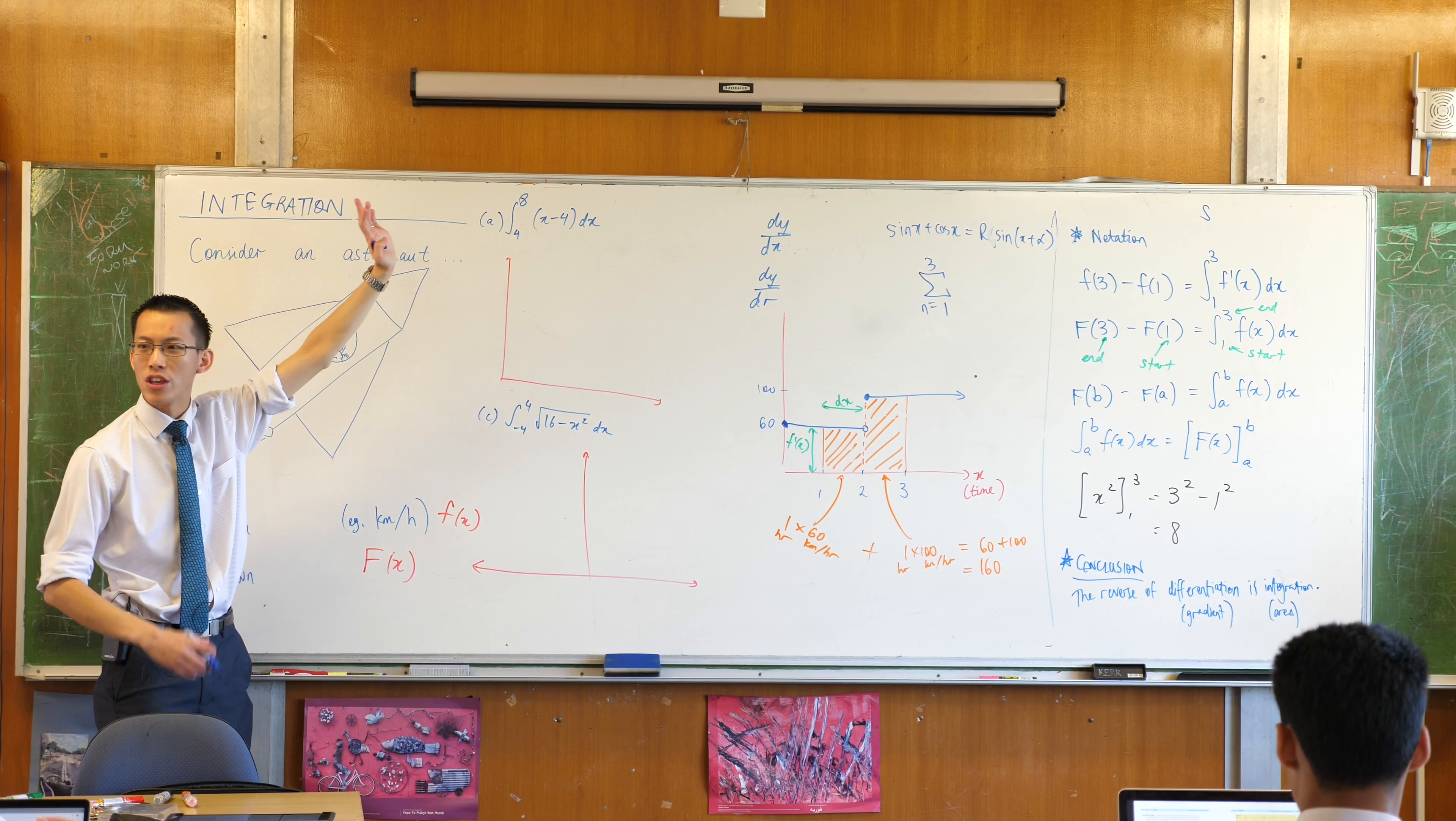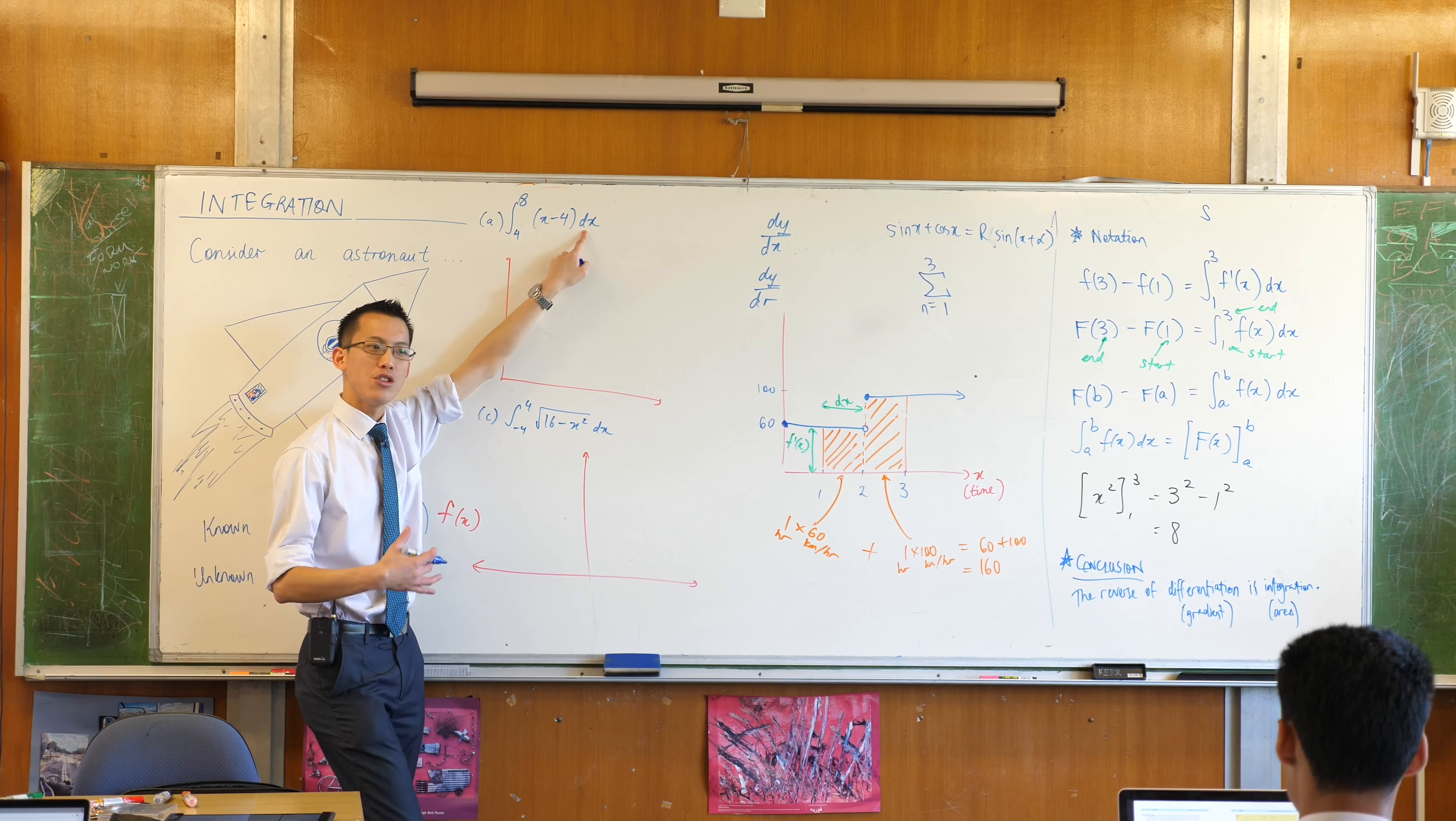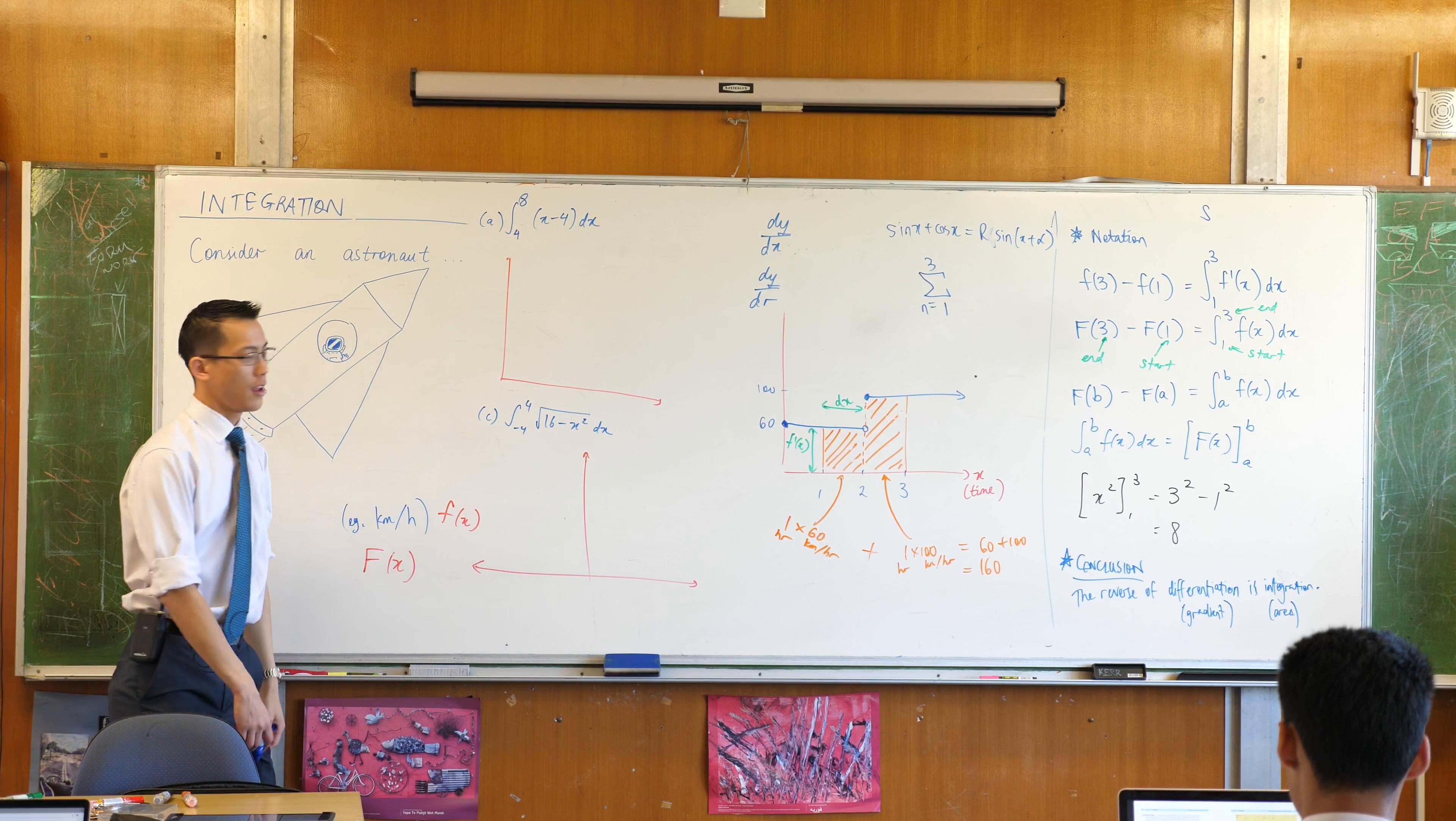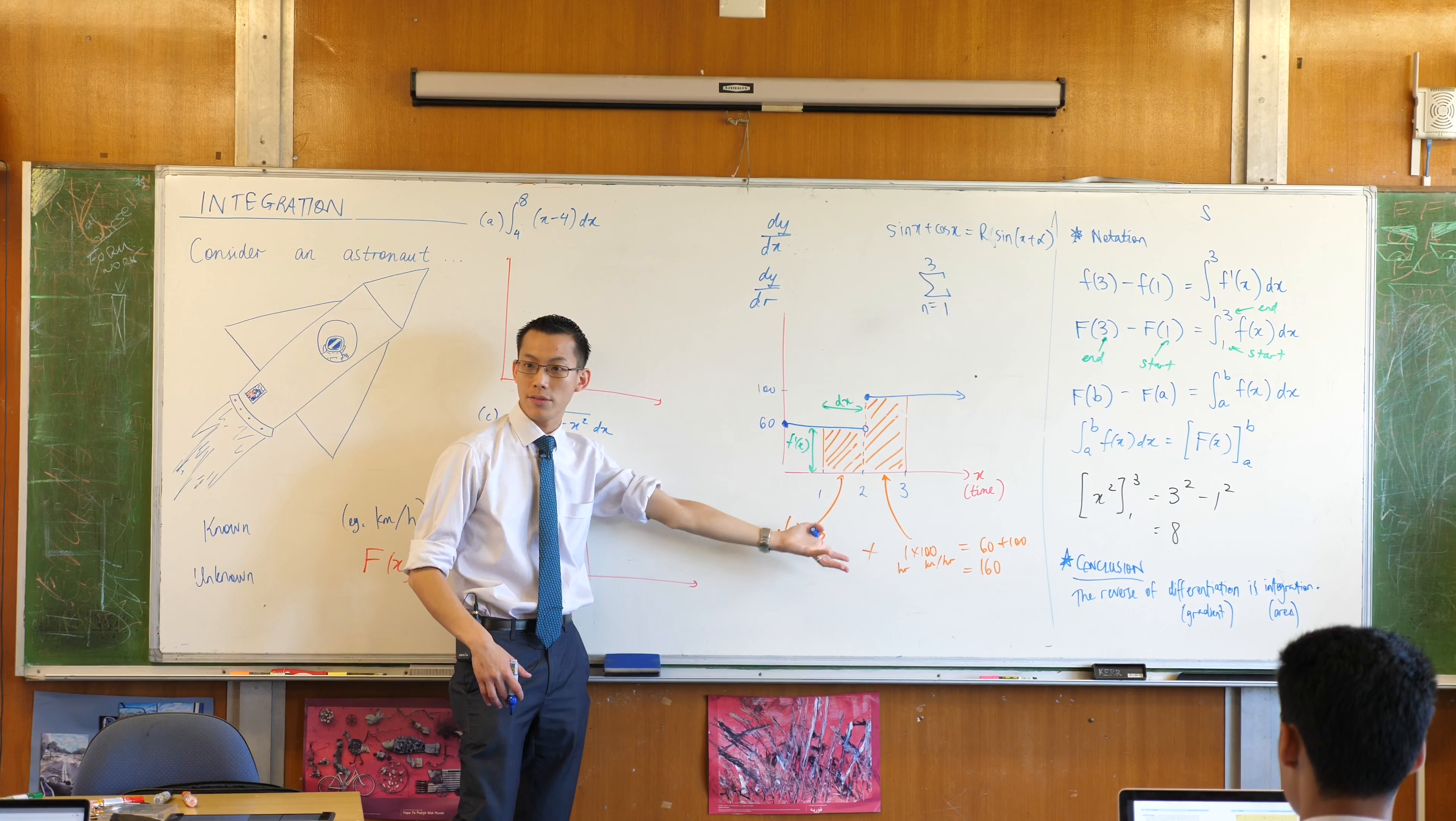So here, when you read an integral, that's what this thing is called, an integral. This thing tells you what are you integrating with respect to, just like this tells you what are you differentiating with respect to. From 4 to 8, well I need to know what this thing looks like. This thing here is the equivalent of my velocity function.